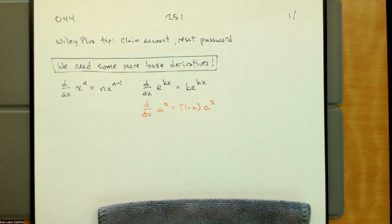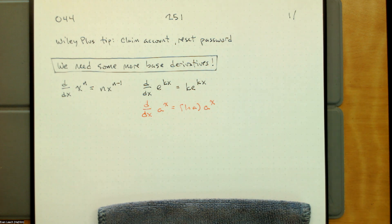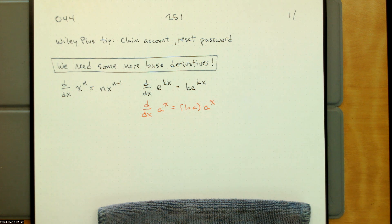We are in the phase of calculus which is finding derivatives. The way that finding derivatives works is we learn a bunch of base model derivatives, and then we learn about some rules for how we can combine the base models to find the derivative of anything. You just have to know your base models and know how they are combined, and that tells you which rule to apply.